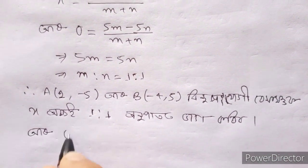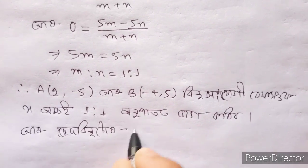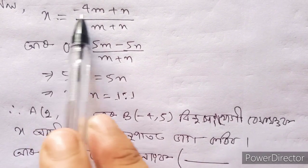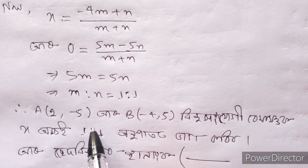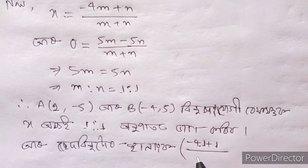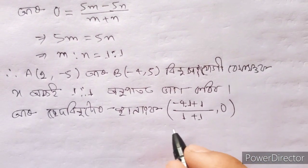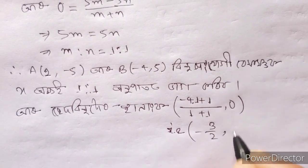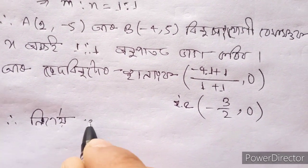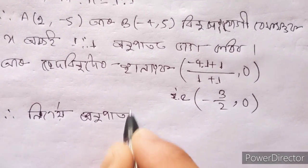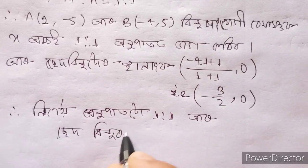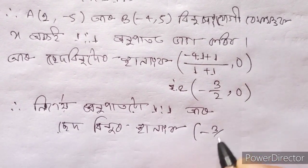I'm going to start over. This loop: X comma 0. So X are x. The ratio is 1 is to 1. So minus 4 plus 1, minus 4 into 1, plus 1 by 1 equals 0. So the result is minus 3 by 2, comma 0.